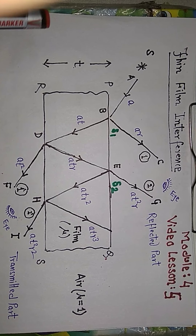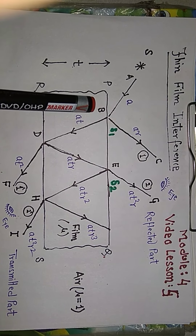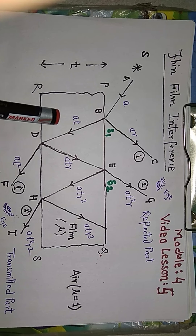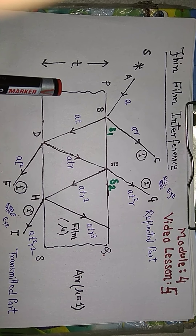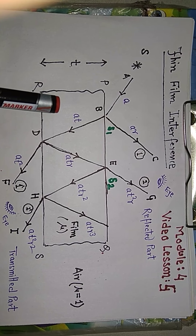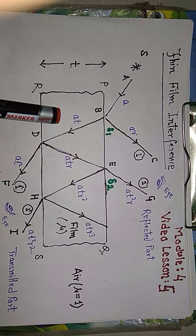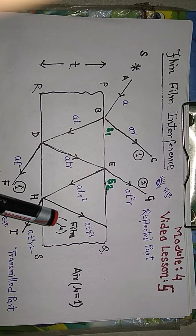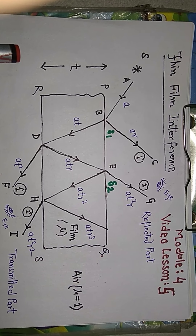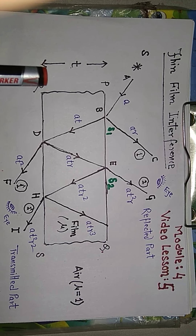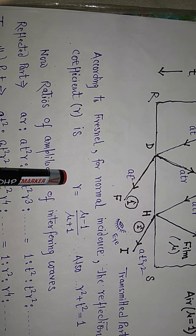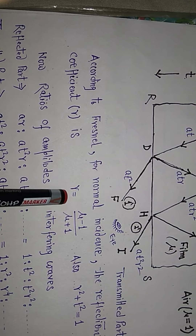Now the question is: how much light is reflected and how much is transmitted? When a change of medium happens, partial reflection and partial transmission occurs — you can see the light reflecting and the light transmitting. It depends on the film's refractive index. There are two parameters: the reflection coefficient and the transmission coefficient.